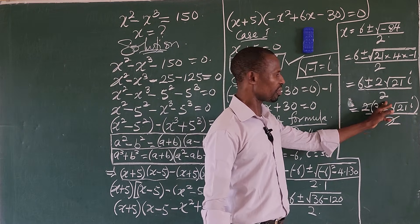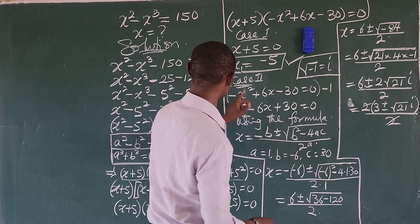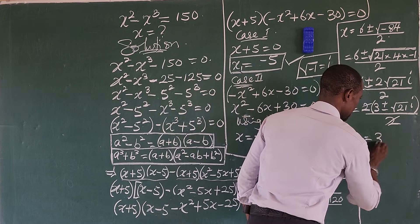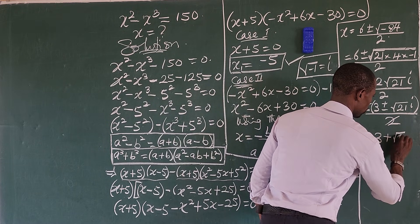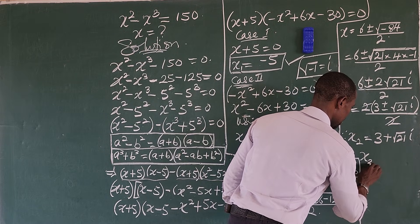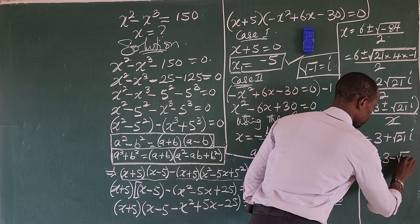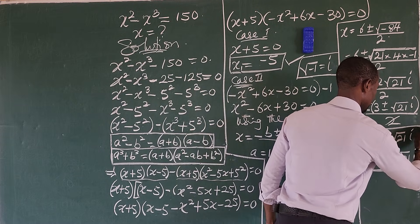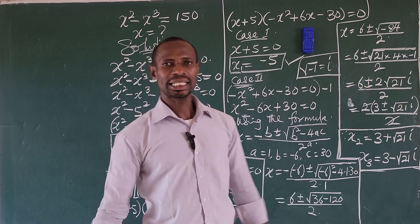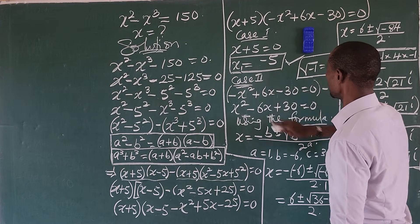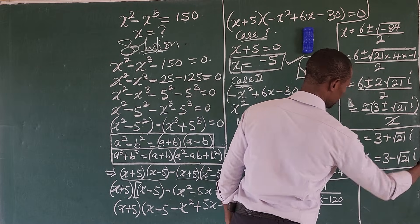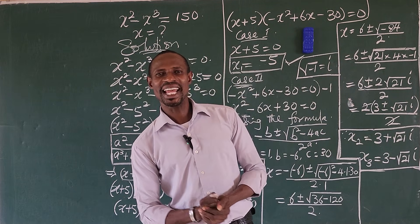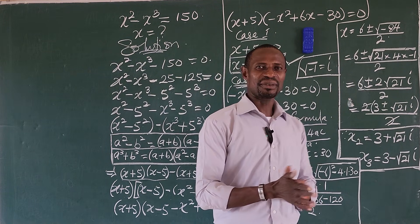So we have two solutions from here because of the plus or minus. Therefore x₂ equals 3 plus the square root of 21 times i, and x₃ equals 3 minus the square root of 21 times i. So these are the three roots that satisfy this challenge: x₁ equals minus 5, and x₂ and x₃ are imaginary. If you plug them in, they satisfy the original equation. This brings us to the end of this math class. Thank you for watching.